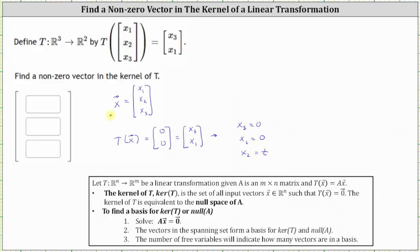Therefore all the vectors X in the kernel of T must be in the form (0, t, 0).